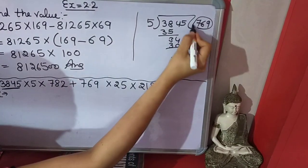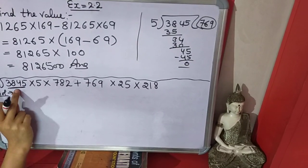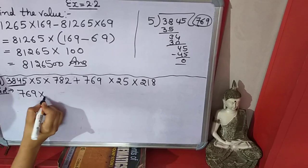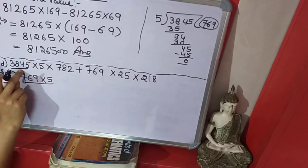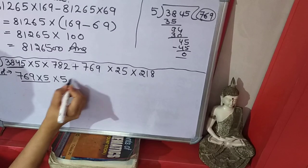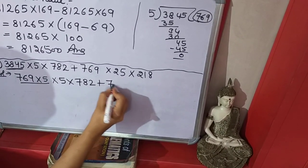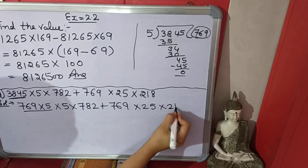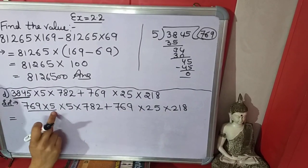Then we will get 769. It is coming so we will break this number. Instead of this number we will write 769 multiply by 5, and we multiply this number then 3845 will come. Rest numbers we will write same. Now 5 times 5 equals 25.